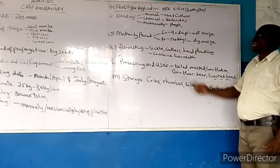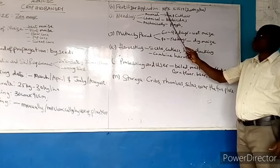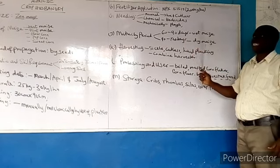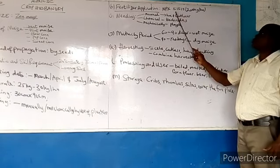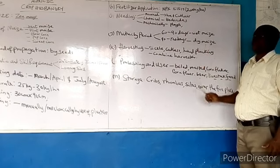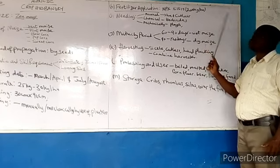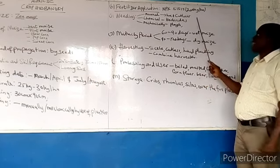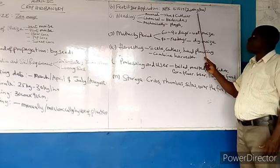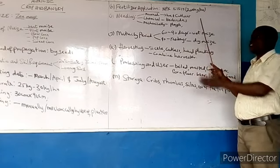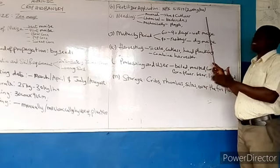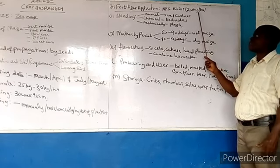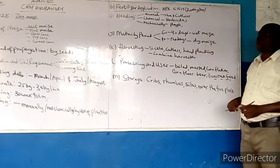The most commonly used inorganic fertilizer is NPK 15-15-15, where N stands for nitrogen, P for phosphorus, and K for potassium. This is a chemically formulated fertilizer. About 200 kg is used within the first three weeks of planting, applied using the row system at least 10 to 30 cm from the maize plant.